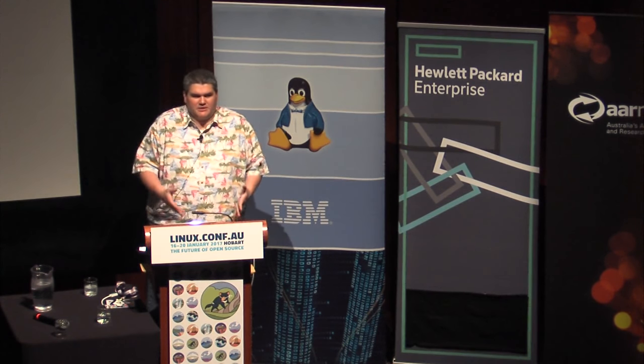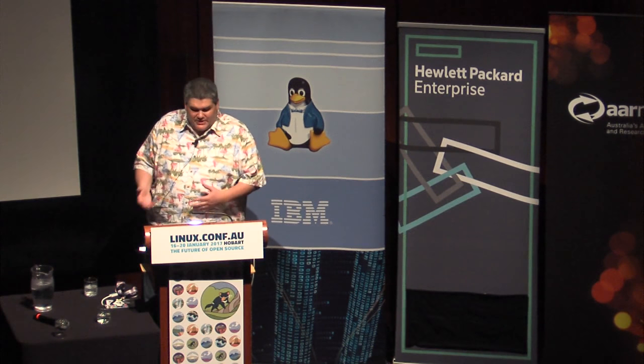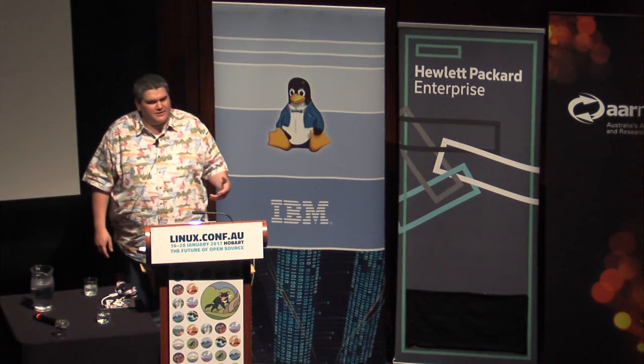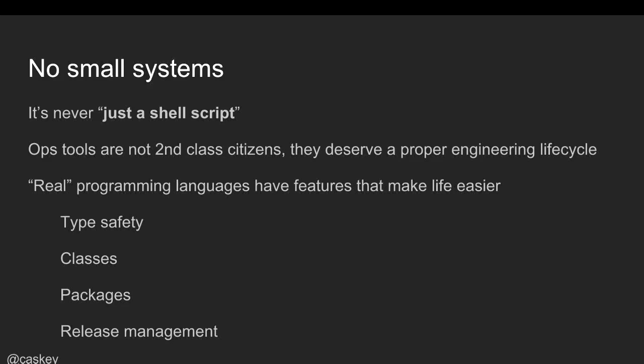Fifteen years ago it was novel to suggest checking Bash scripts into revision control. Nowadays if you find someone not checking their management tools into Git, you ask why. We are becoming, whether we like it or not, software engineers who happen to run systems. Bash and Python were not designed as software engineering languages — they were designed as scripting languages. But our scripts are no longer short. They're now thousands of lines long with multiple modules. We need languages that have type safety, classes, packages, and a sane release management model.